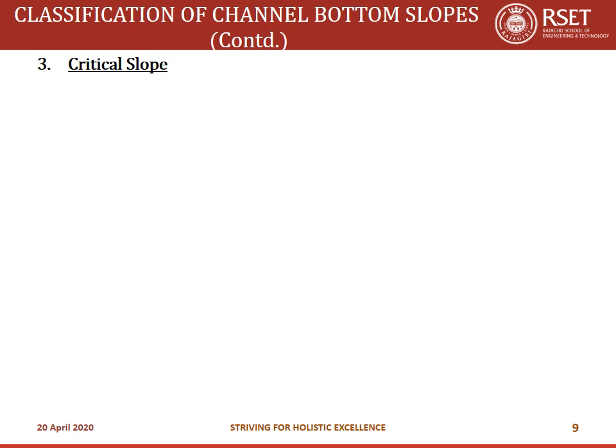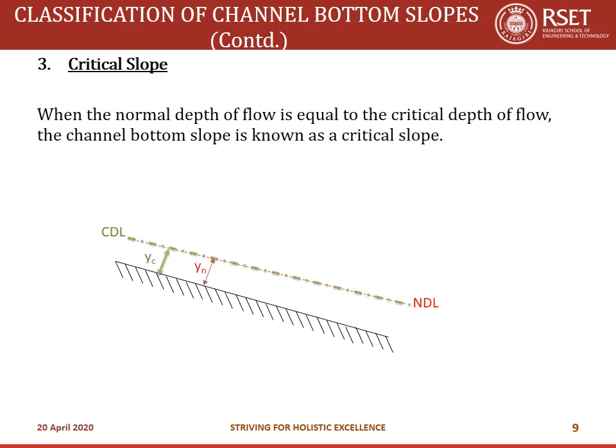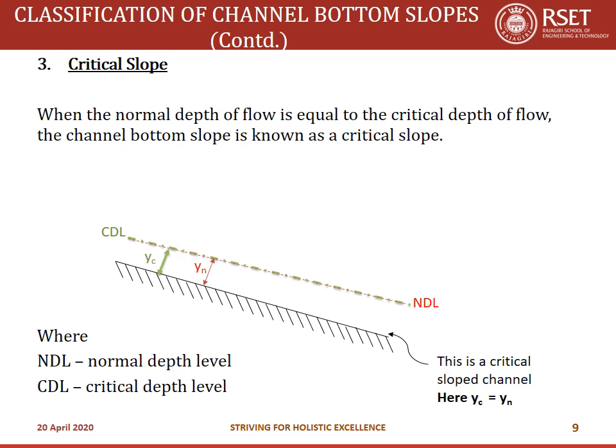The third classification is critical slope. When the normal depth of flow is equal to the critical depth of flow, the channel bottom slope is known as critical slope. In a critically sloped channel yn and yc are equal, meaning NDL and CDL coincide. To summarize: if yn > yc, the slope is mild; if yc > yn, the slope is steep; if yc = yn, the slope is critical.